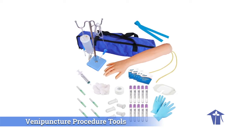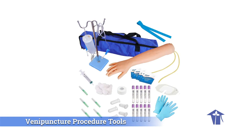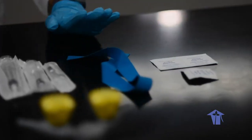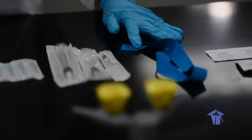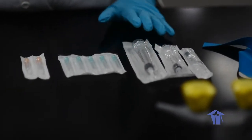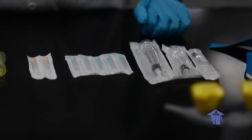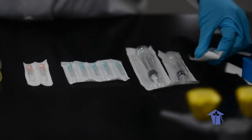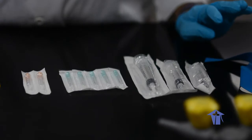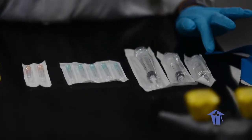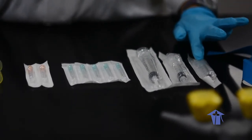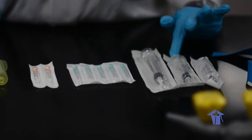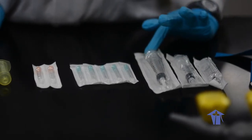So we have the alcohol prep pads. We have a tourniquet. We have, for the syringe method, three sizes of syringe, one that has a capacity of three mls, another five mls, another ten mls.